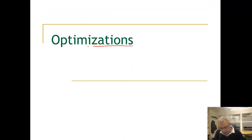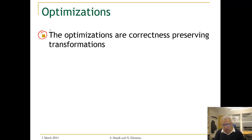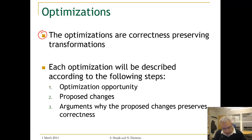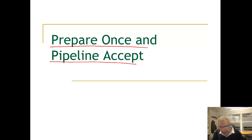The optimizations we are going to address are all correctness-preserving transformations. We know that the algorithm is correct, and every transformation we do will render a correct algorithm. Each optimization will be described with the proposed changes and correctness arguments. In this unit we are going to talk mainly about one single optimization called prepare once and pipeline accept.